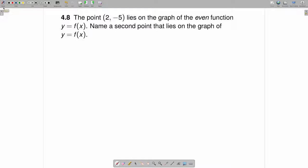Point 2, negative 5 lies on the graph of the even function y equals f of x. Name a second point that lies on the graph of y equals f of x.